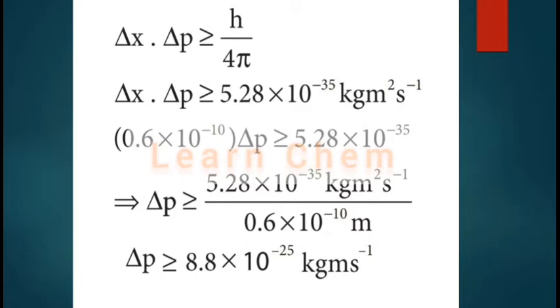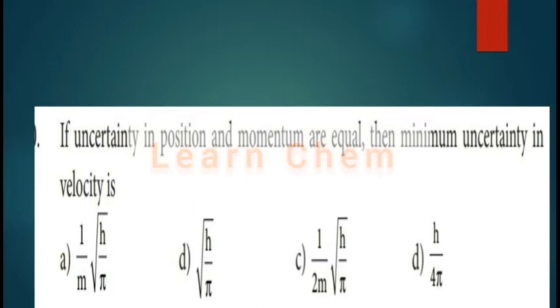The next problem is a multiple choice type. If the uncertainty in position and momentum are equal — that is Δx = Δp — what will be the minimum uncertainty in velocity?